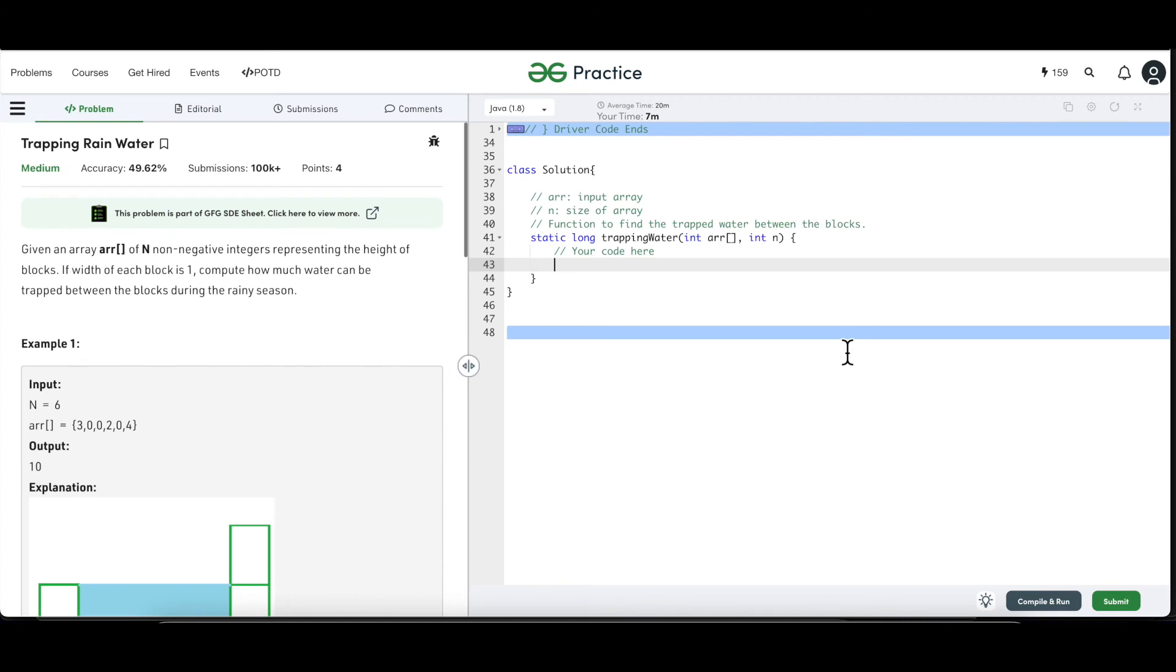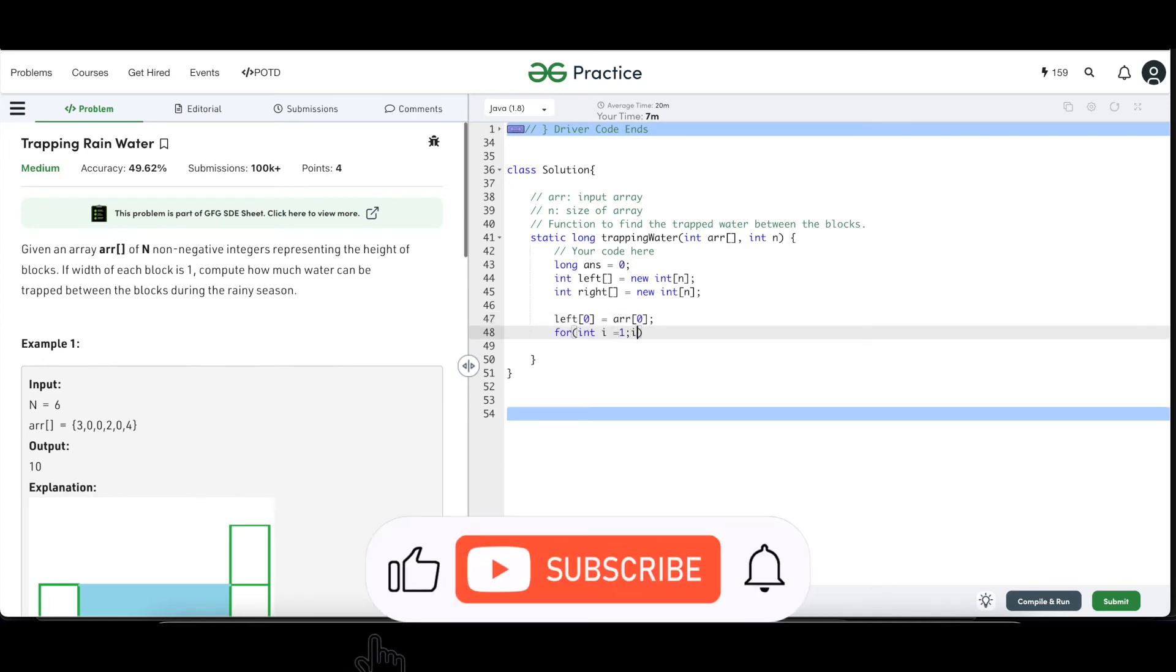So now we'll start with the code changes. So since the return type is long, so we'll first store this as long only, the potential answer for this. And then we'll start with the array preprocessor. So we'll create two temporary arrays. We'll call one of them as the left array. The first element of this left array is going to be the first element of the ARR. So we are going to initialize that. And now we will start with the rows. So we'll start from the first index i equal to 1, i less than n, i plus plus.